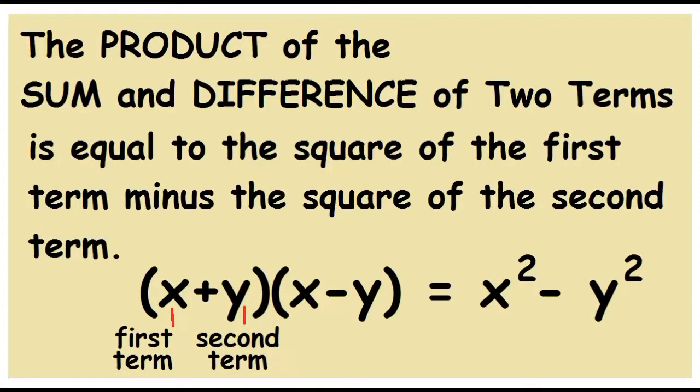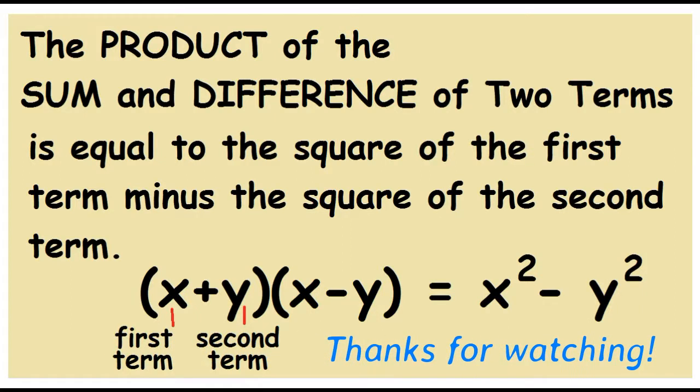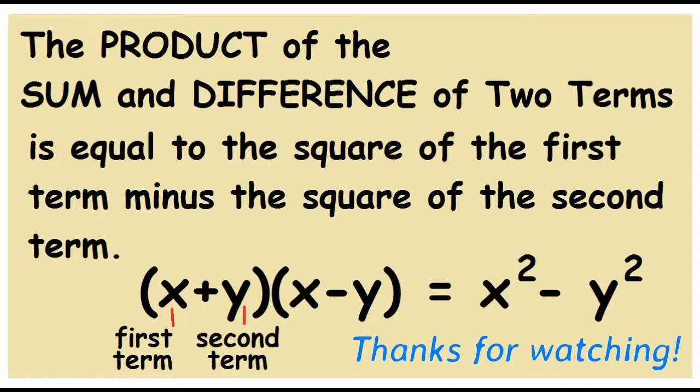Don't forget: the product of the sum and difference of two terms is equal to the square of the first term minus the square of the second term. Thanks for watching.